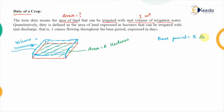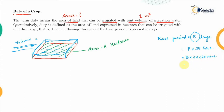That crop has a base period of B days — meaning the number of days required by the crop for its total growth equals B. If we want to convert this base period into seconds: B days × 24 hours × 60 minutes × 60 seconds, giving B × 24 × 60 × 60 seconds as the base period of the crop in seconds.